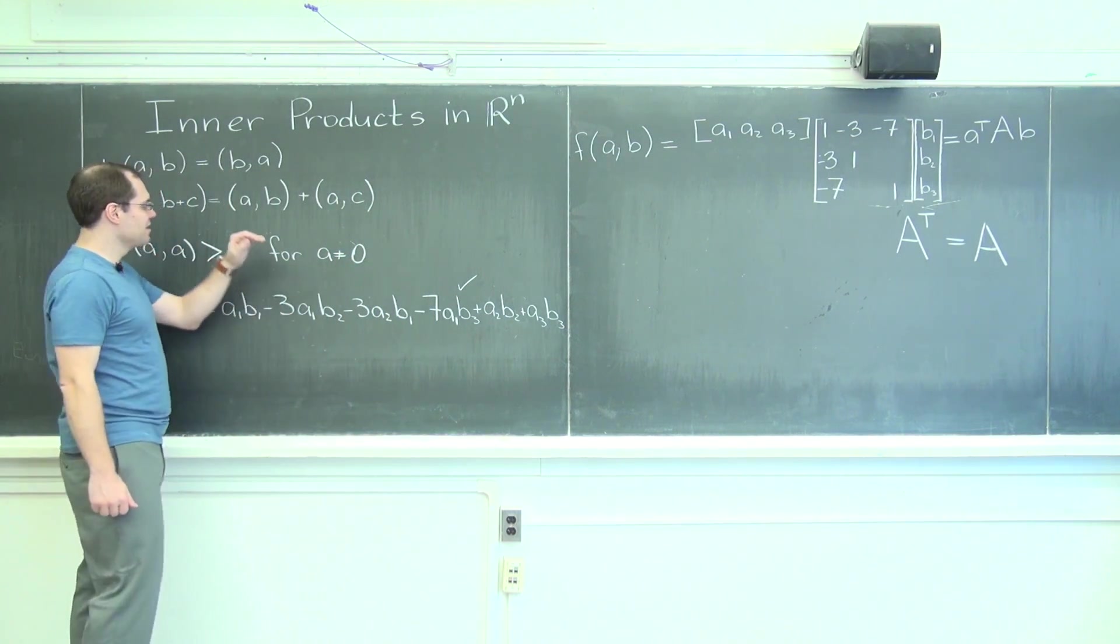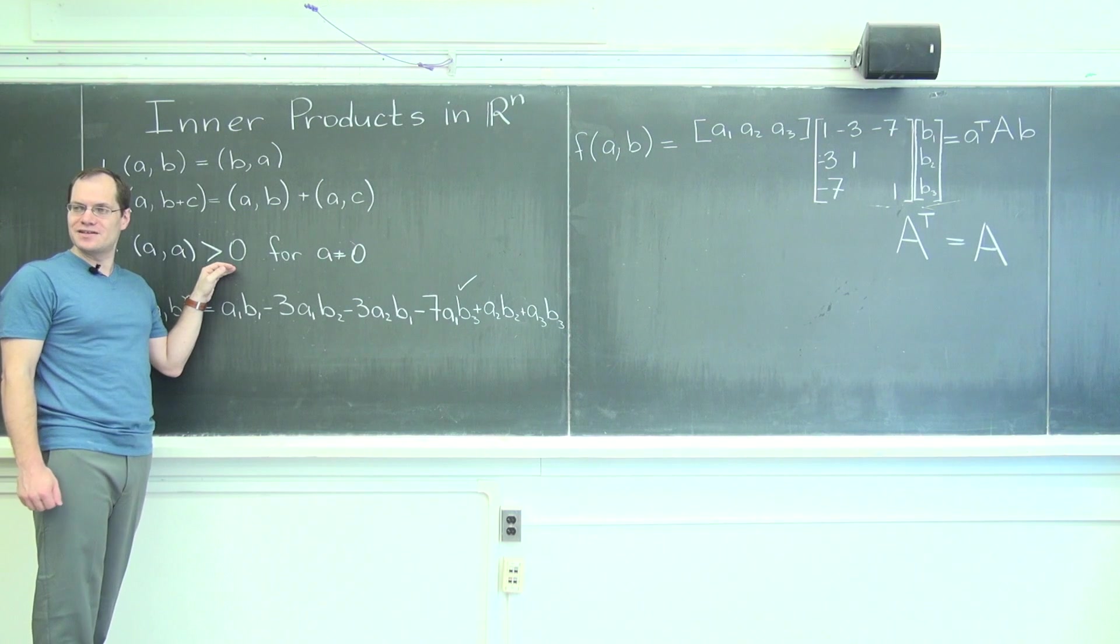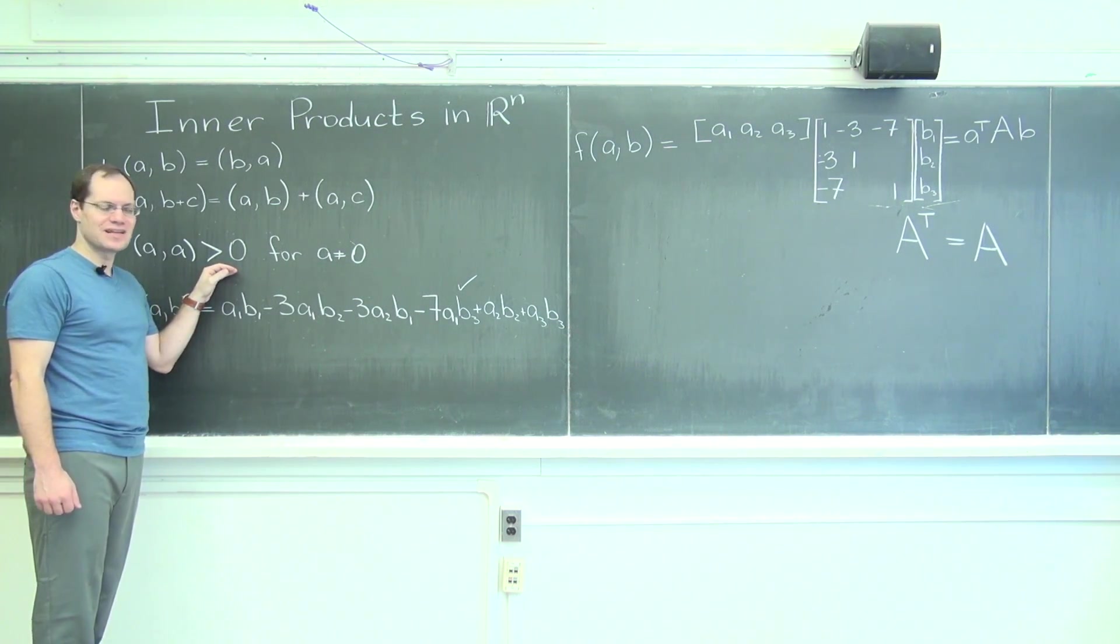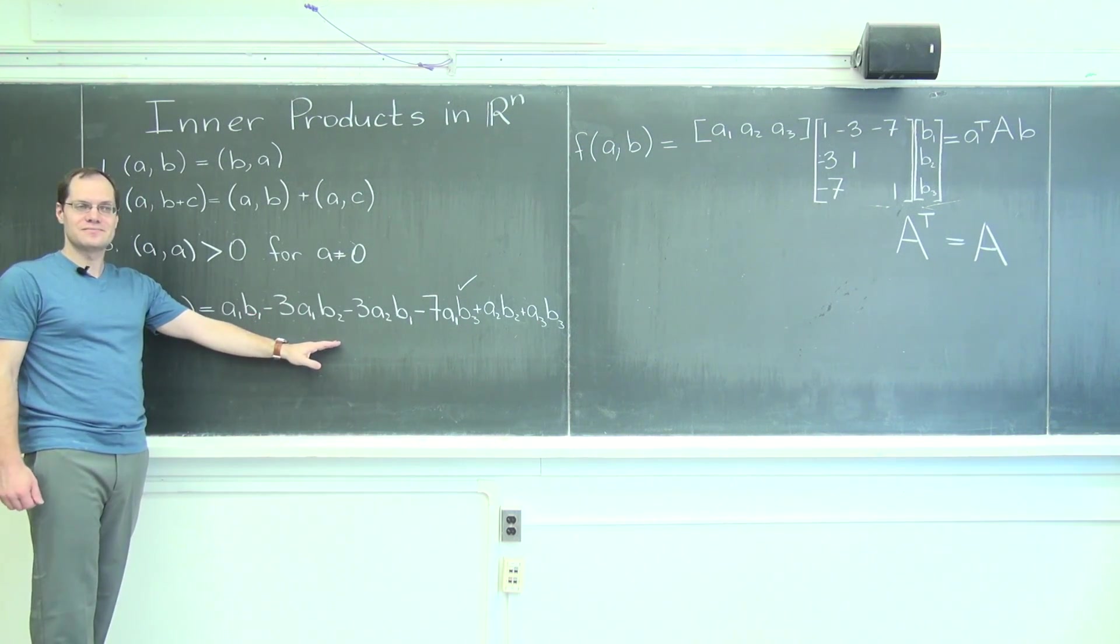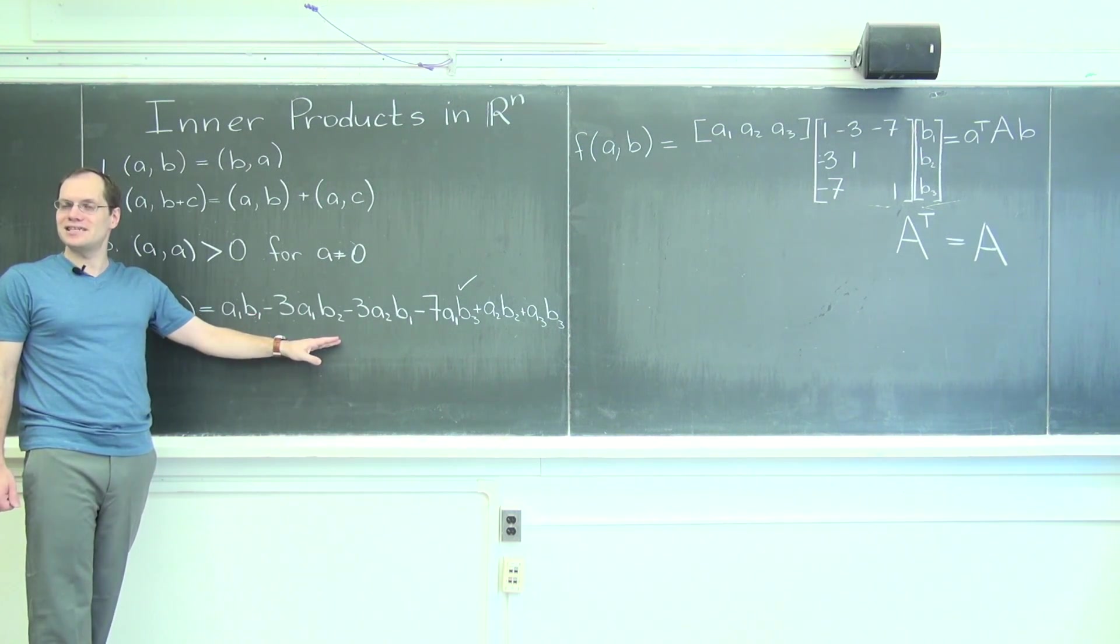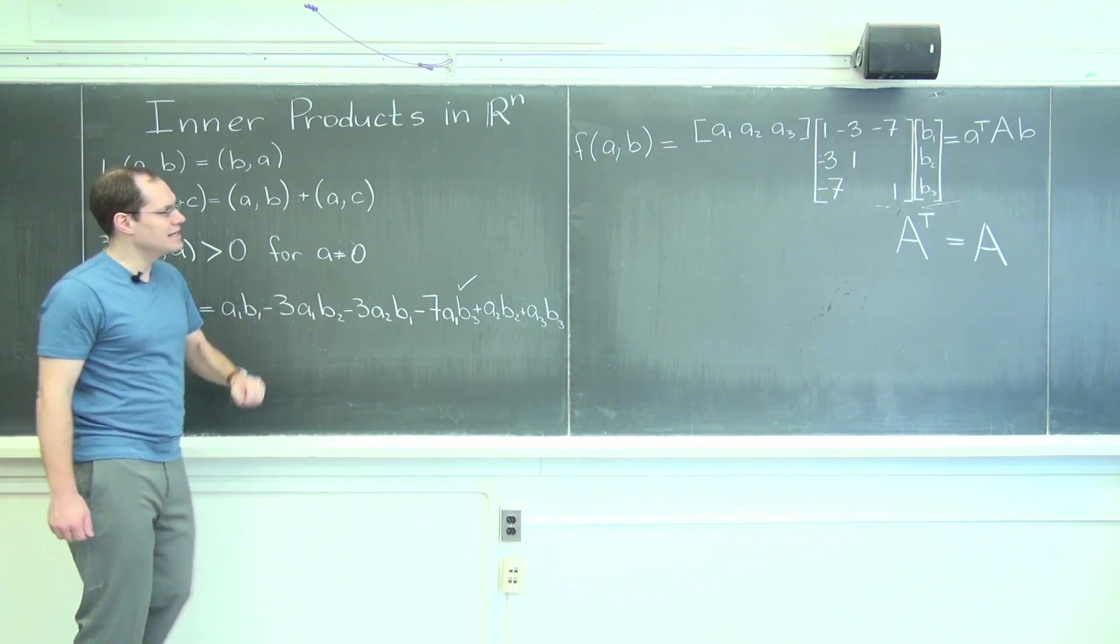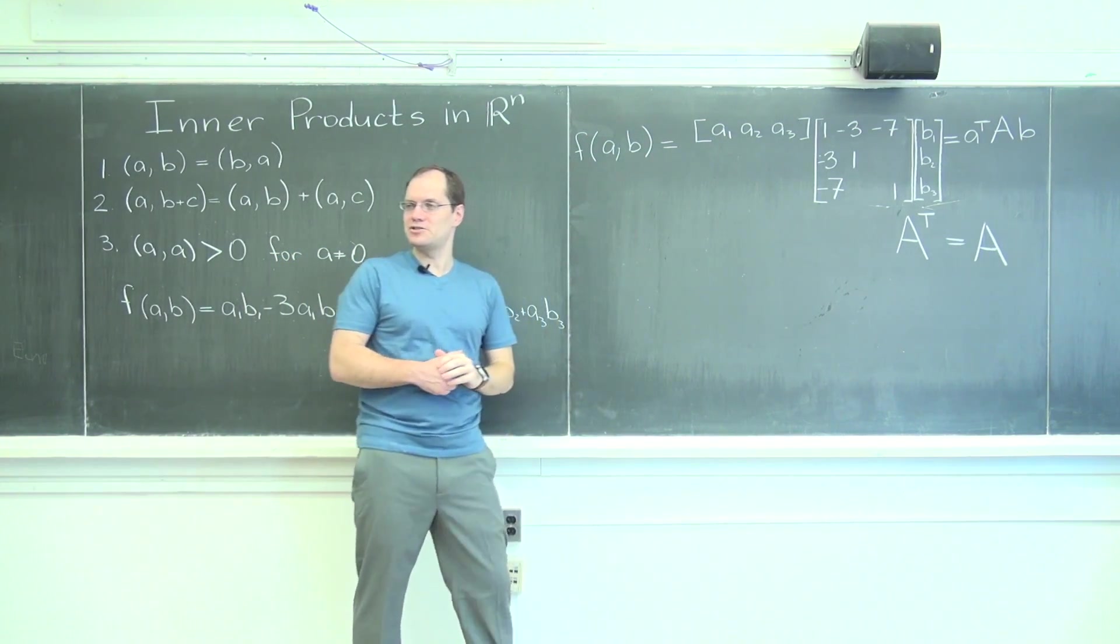But we're still one very important property short, positive definiteness. Does this equation have the positive definite property? Is it positive definite? What does that mean? It means, in terms of, now let's just speak in terms of matrices, that if we only evaluate F of one vector, A, if B is taken to be A.